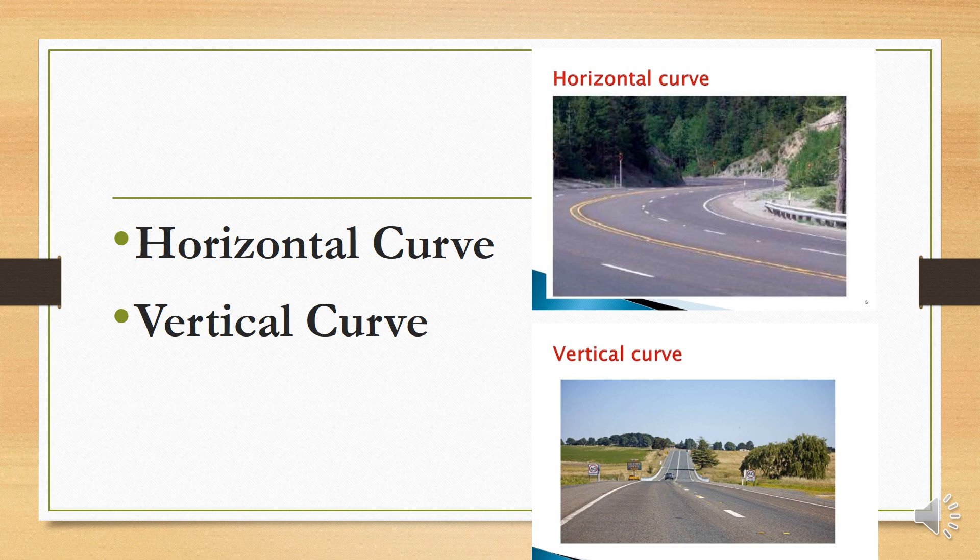Now, types of curves. There are two types of curves: the first one is horizontal curve and the second one is vertical curve. The horizontal curve lies in the horizontal plane of the road, which we see when we turn left or right while traveling.